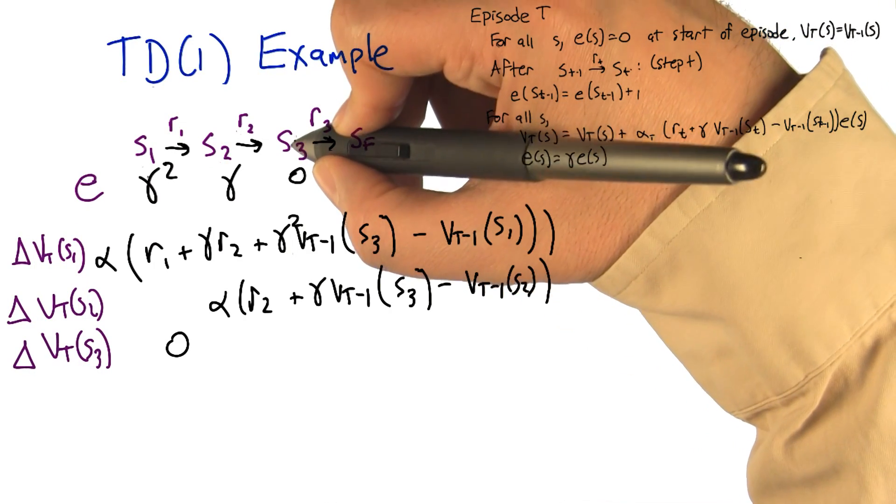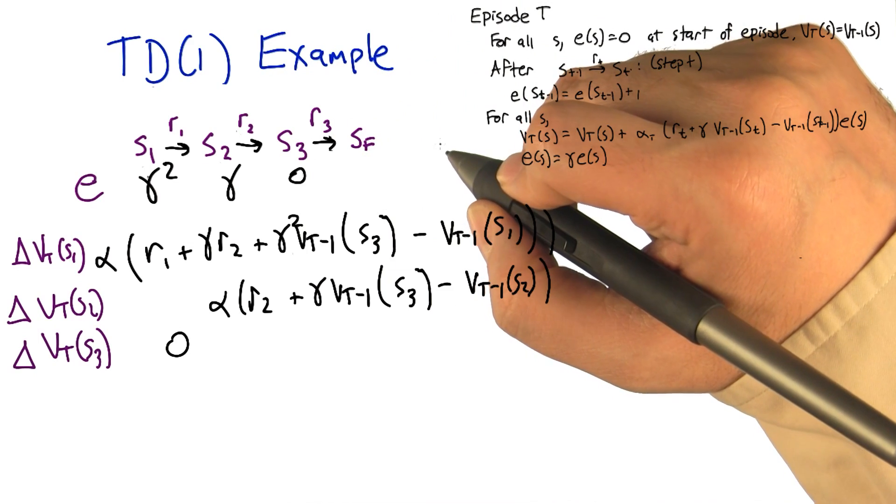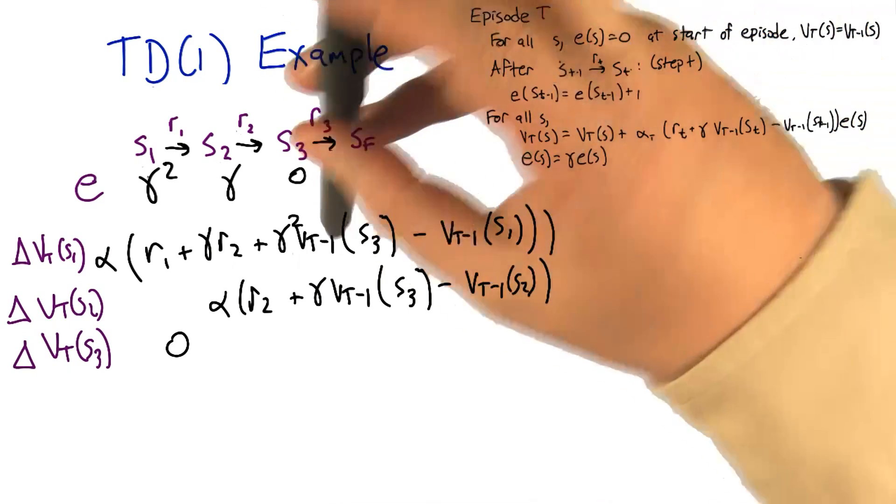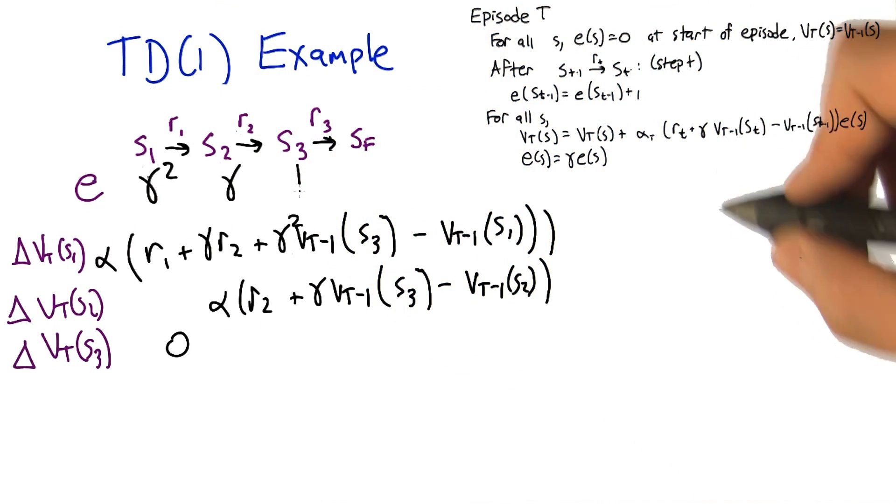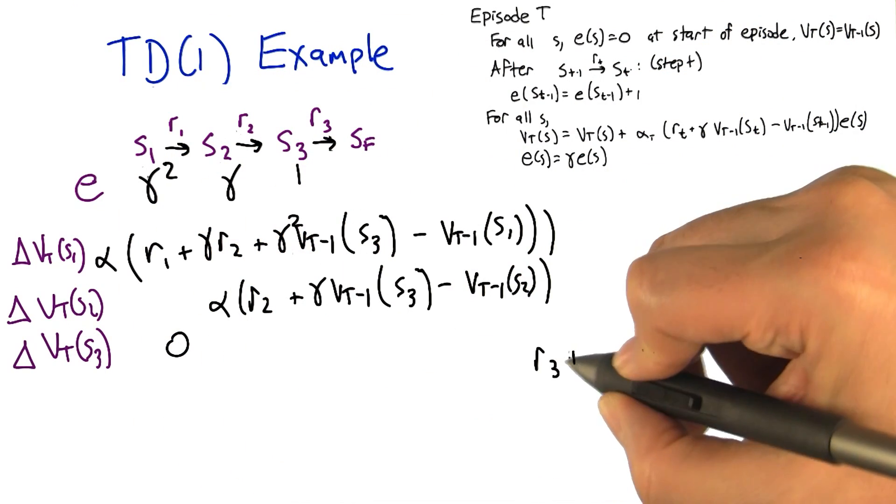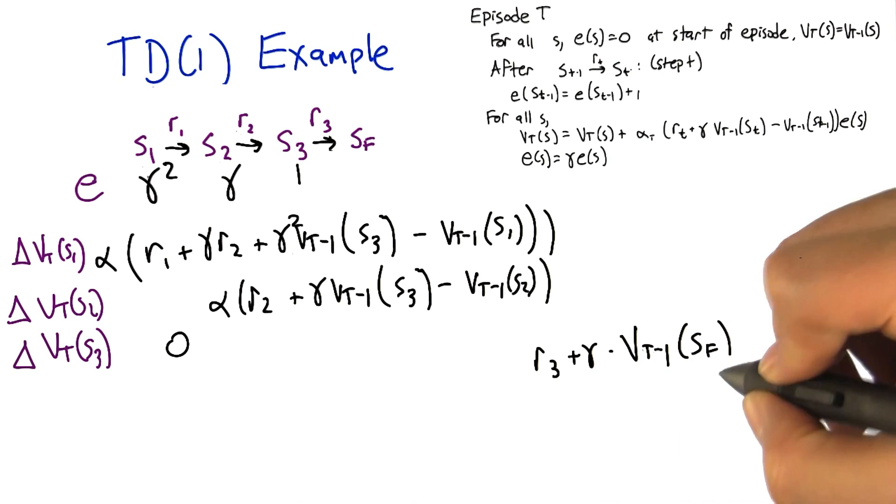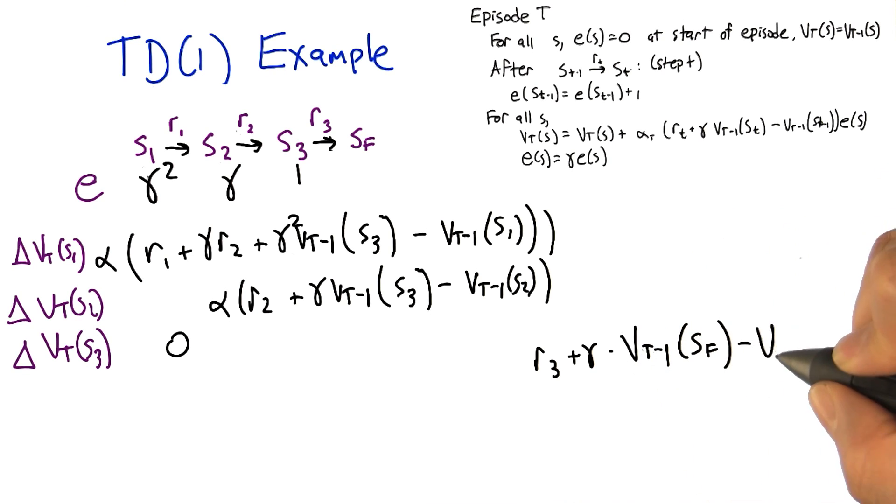The next step takes us from S3 to SF, and we get reward R3 when that happens. The first thing that happens is we update the eligibility for that state. Then we compute this quantity that we're going to add to all the state updates. This gives us R3 plus gamma times the previous value of the state that we just ended up in, minus the state that we came from.